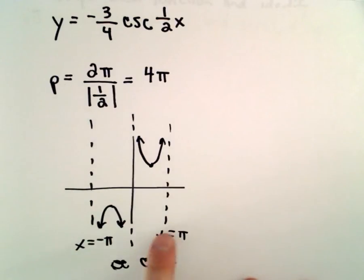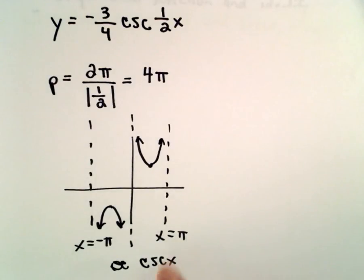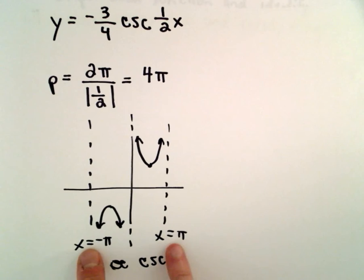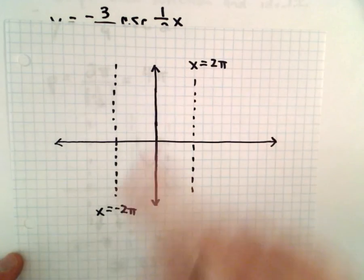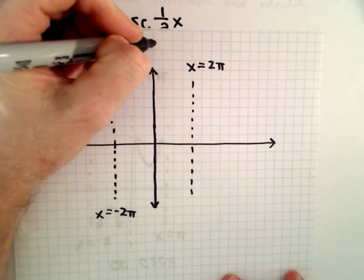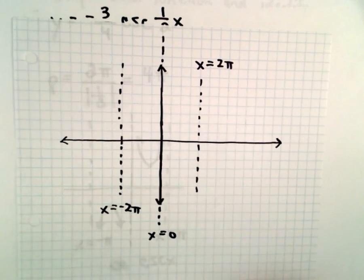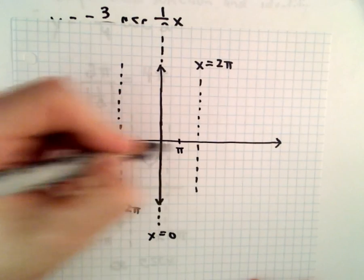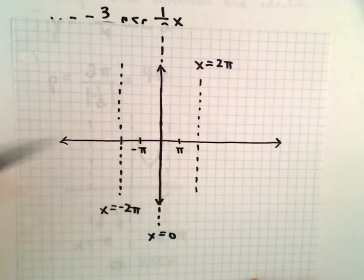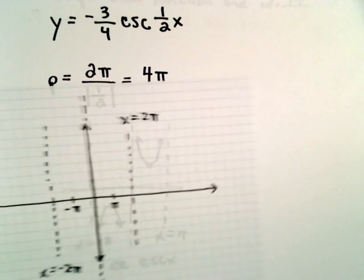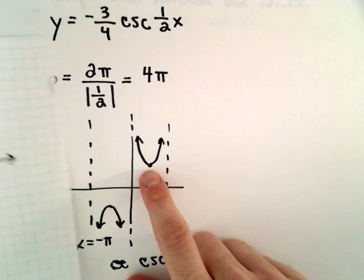But again, this has been doubled. So now instead of sitting at x equals pi and at x equals negative pi, instead of our vertical asymptotes being there, we're going to have vertical asymptotes at x equals two pi and at x equals negative two pi. And we still also have our asymptote at x equals zero. So the point right there in the middle would be pi and also at negative pi.